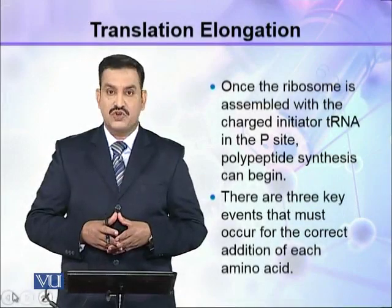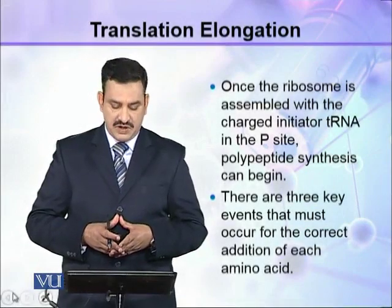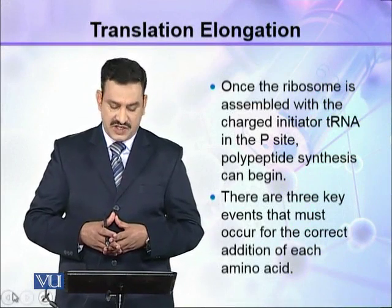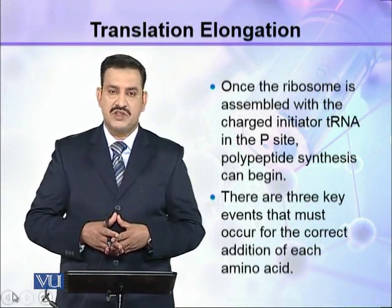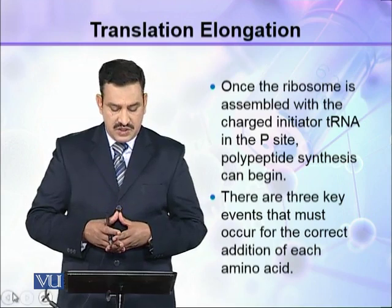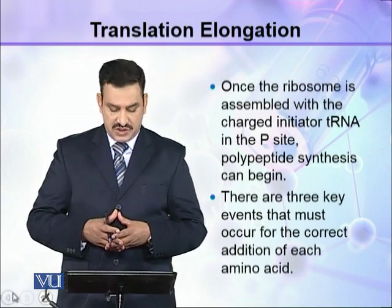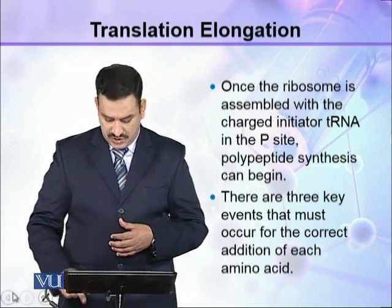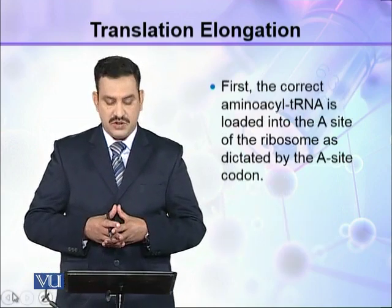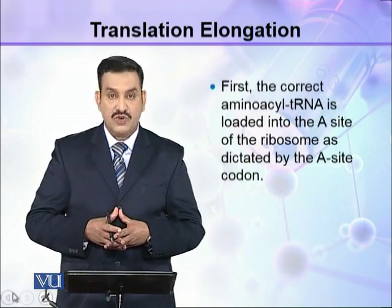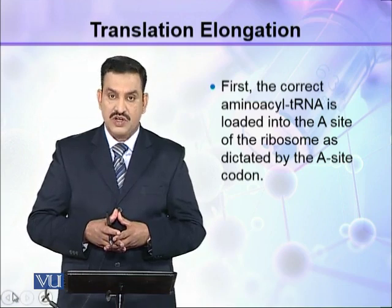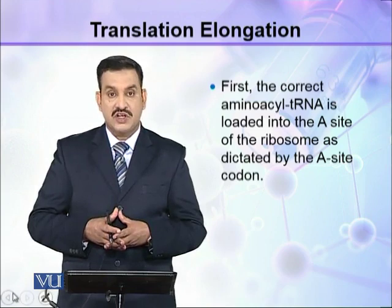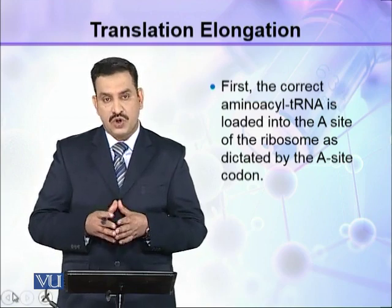Once the ribosome is assembled with the charged initiator tRNA in the P-site, polypeptide synthesis can begin. There are three key events that must occur for the correct addition of each amino acid. First, the correct amino acid tRNA is loaded into the A-site of the ribosome as dictated by the A-site codon.